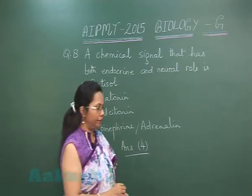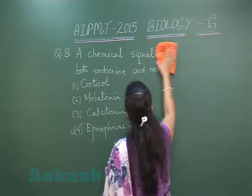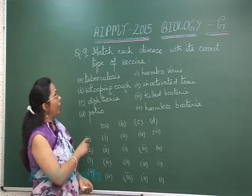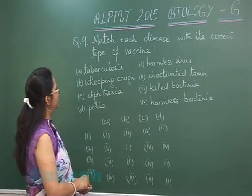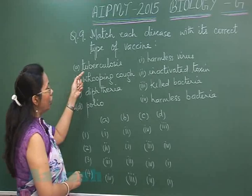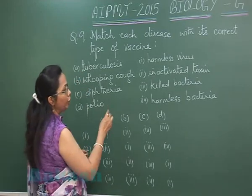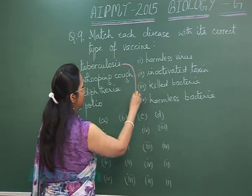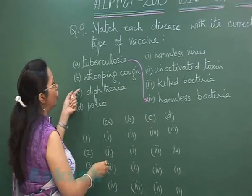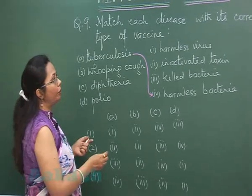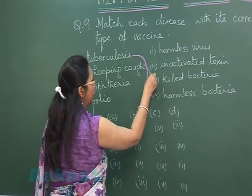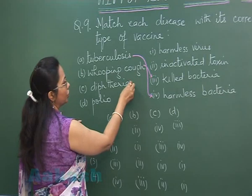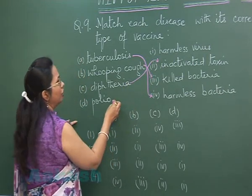Let us move on to question number 9. Here we have to match the disease with the correct vaccine. For tuberculosis, it is the attenuated vaccine where the bacteria have been made harmless. For whooping cough or pertussis, the bacteria has been killed, so it is a killed bacterial vaccine. For diphtheria, the bacterial toxin is inactivated, so it is a toxoid vaccine.